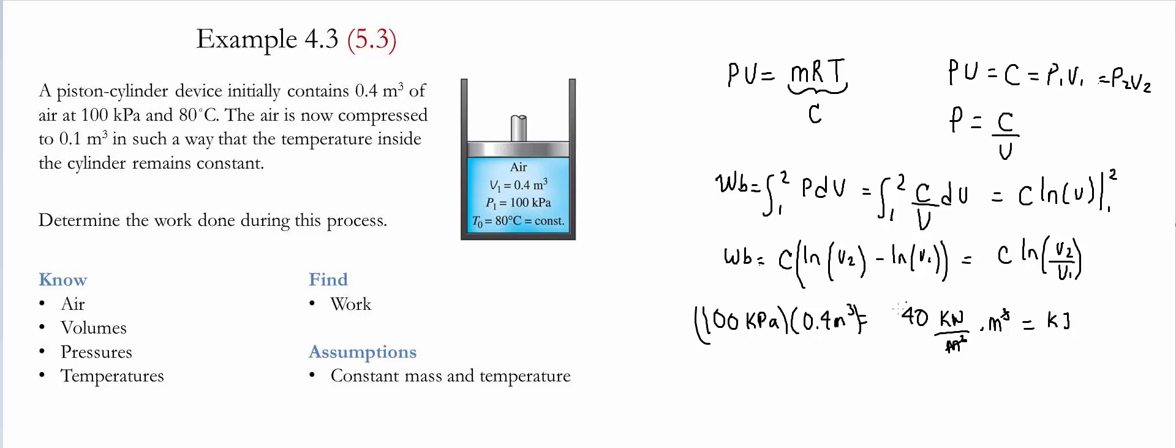Then we take this value of constant c and multiply it into this equation. And then we get that the boundary work is simply going to be 40 kilojoules times natural log of the ratio of the volumes. The final volume is equal to 0.1 meter cubed, and the initial volume is equal to 0.4 meter cubed.